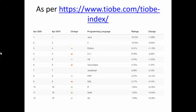According to TIOBE index statistics from April 2020, C is still in second position — first is Java. C has been around for more than 30 years and is still not going anywhere. It remains in second position, and most job opportunities are available in C. As I said earlier, if you know C properly, you can learn any other language easily and become a good program developer.